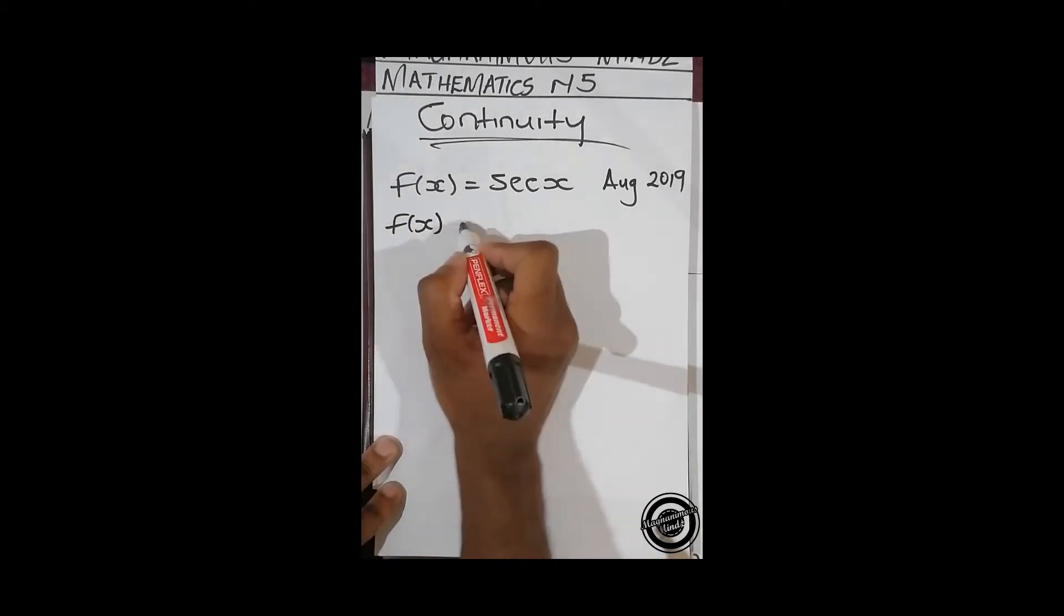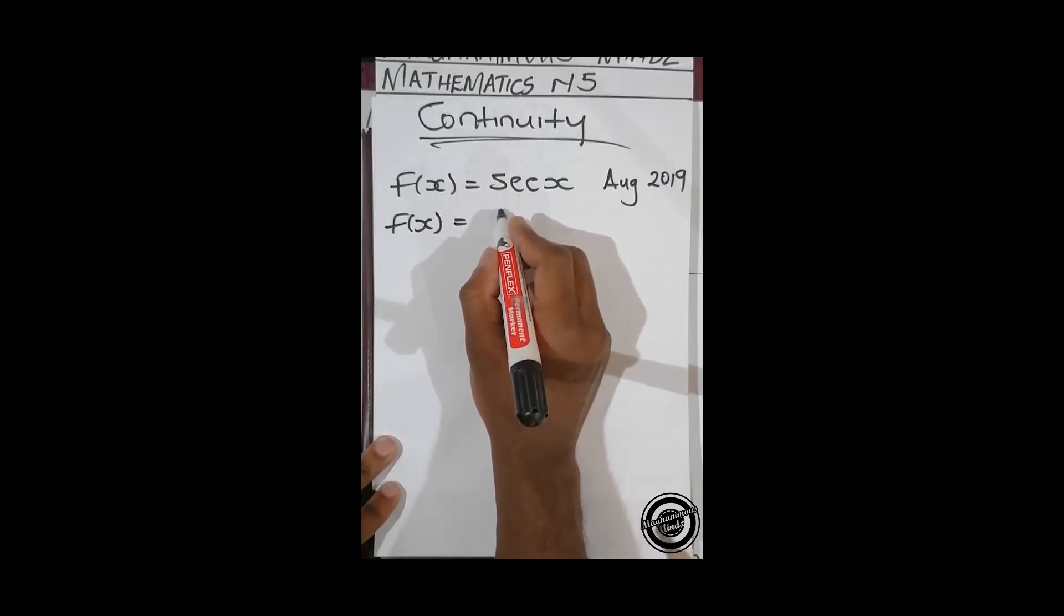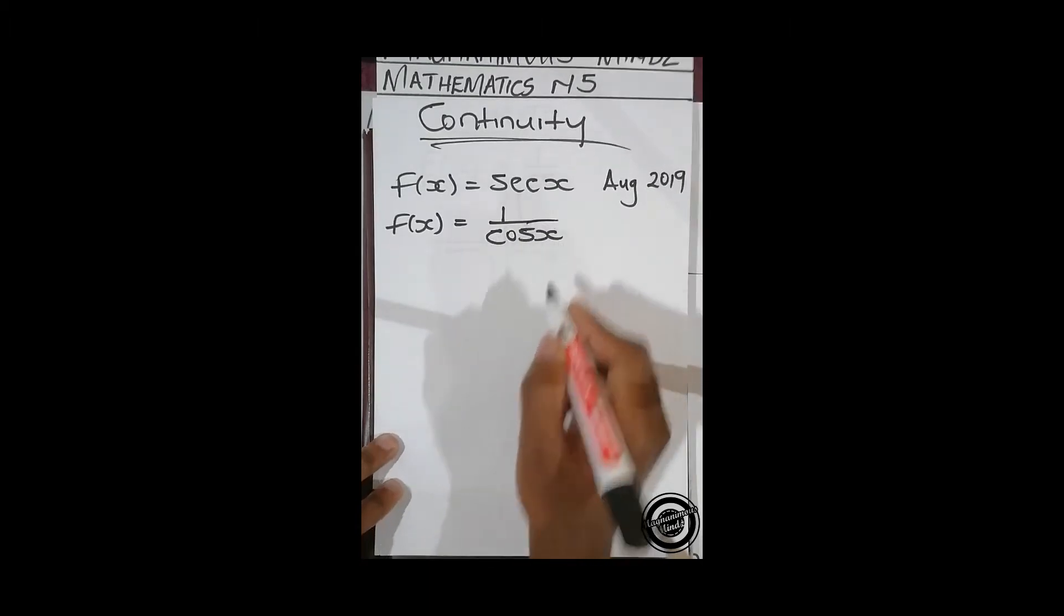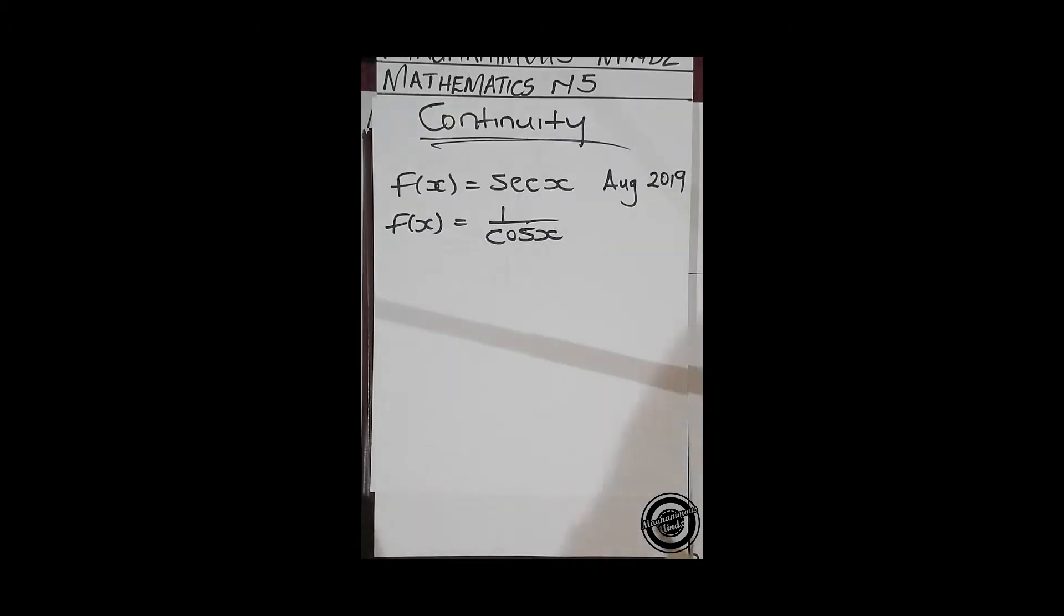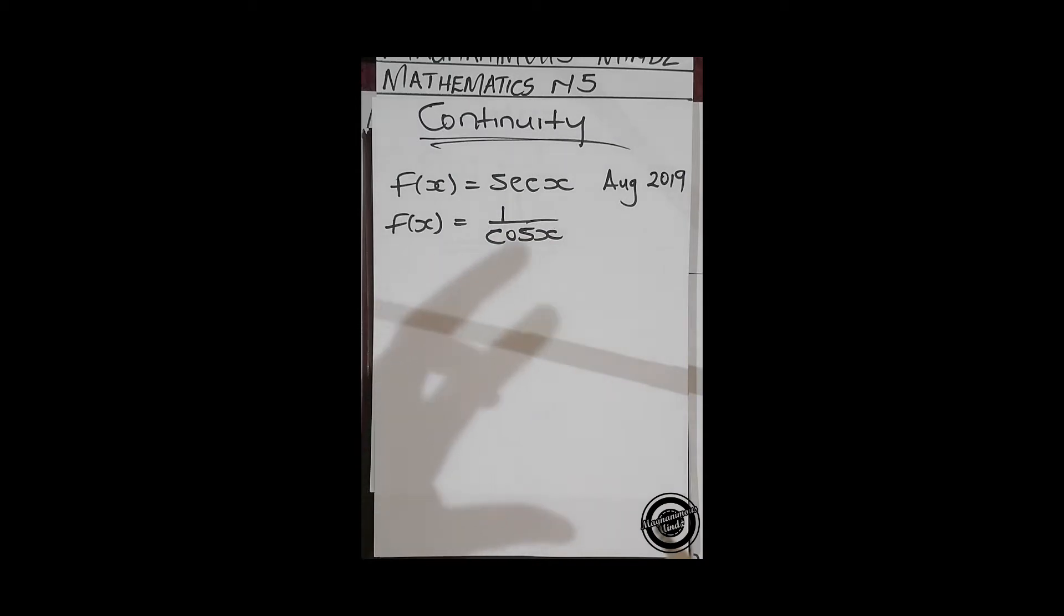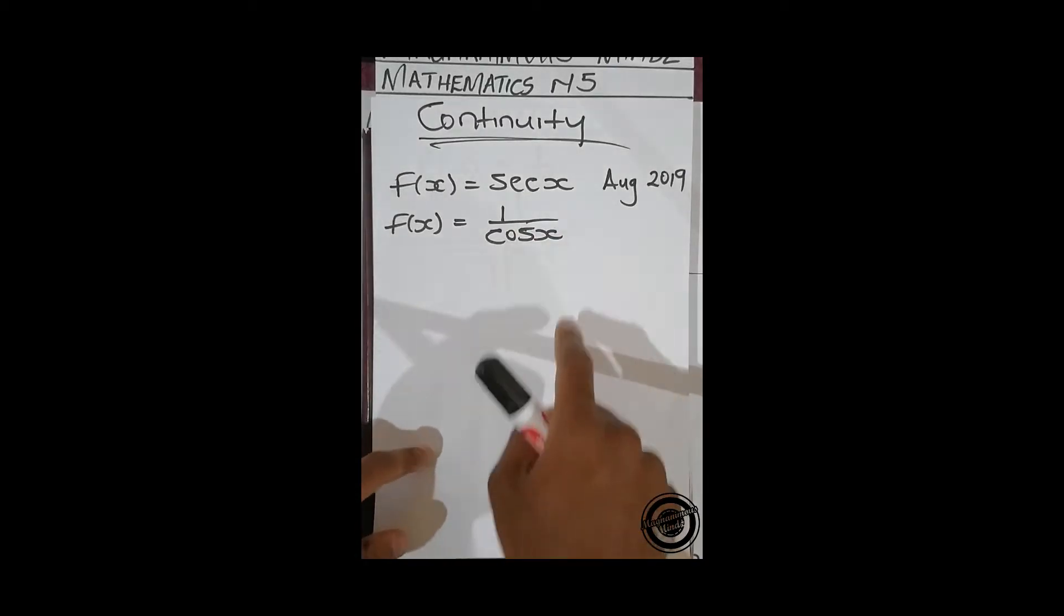So you write it in that form, 1 over cos x. Then since they asked you whether this function is continuous or not, you first figure out if cos x is discontinuous at some point. But then cos x is not discontinuous at some point, but it gives you zero at some points and you can't divide one by zero, that means it's undefined.